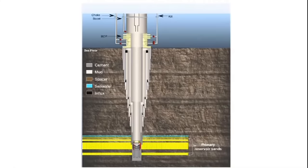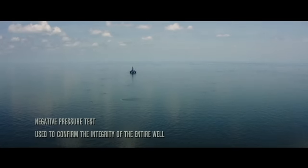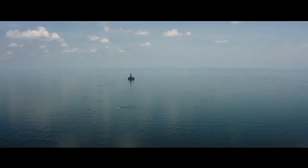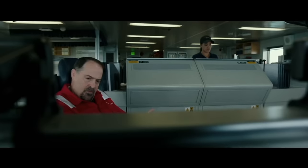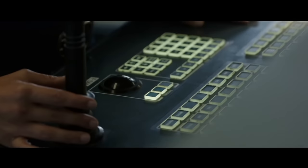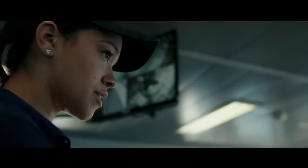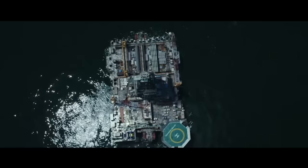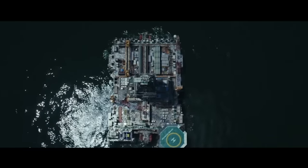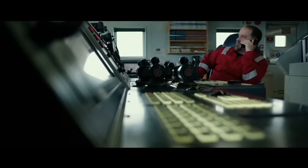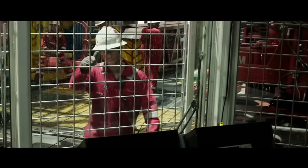It's now early afternoon. The drill pipe was run to 8,367 feet in preparation for the negative test, which was the second test of the well's integrity. The test's purpose was to place the well in a controlled, underbalanced state to test all mechanical barriers. It was conducted by displacing some of the mud in the well with a spacer, followed by seawater.